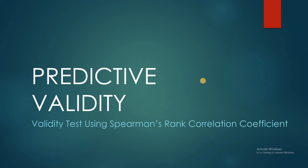Hi! Magandang araw! My name is Teacher Glenn. In this video, we'll be talking about predictive validity. Predictive validity is under the criterion validity. It has two types: the concurrent and the predictive validity. Both use correlation — Pearson R and Spearman rank. But in this video, we're going to use Spearman's rank correlation coefficient. So let's start.